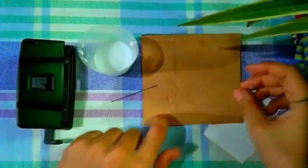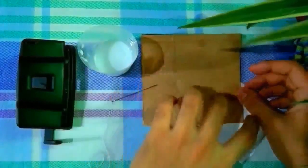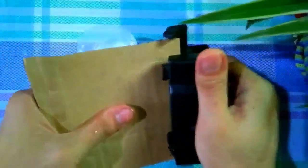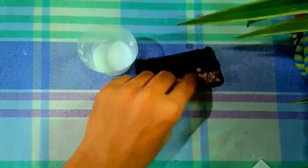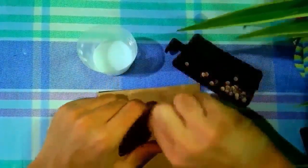For the thylakoids, we need the puncher, glue, needle, and cardboards. Using the puncher, cut holes from the cardboard. We have now the thylakoids. Using the needle and thread, sew the tiny circles.